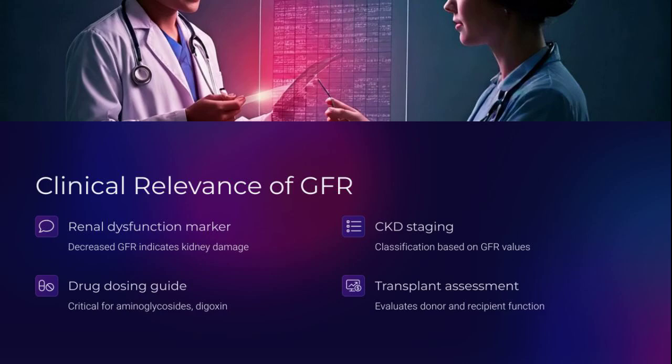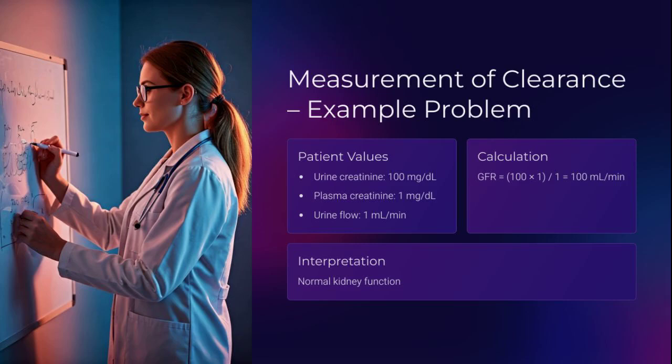GFR helps us stage chronic kidney disease, adjust drug dosing for renally excreted medications like digoxin and aminoglycosides, and evaluate kidney function in transplant candidates. In practice, GFR isn't optional — it's essential. For example: if urine creatinine is 100 mg/dL, plasma creatinine is 1 mg/dL, and urine flow is 1 mL/min, then GFR equals 100 — that's normal, a textbook kidney.